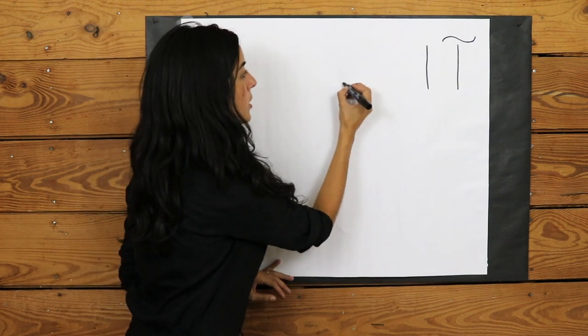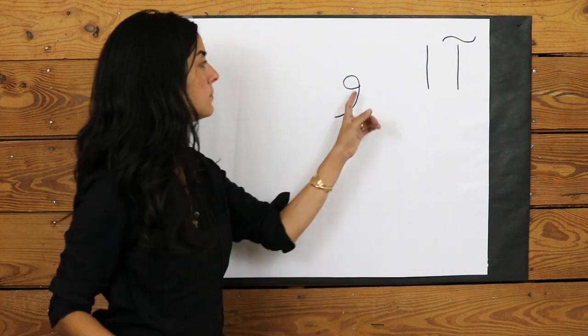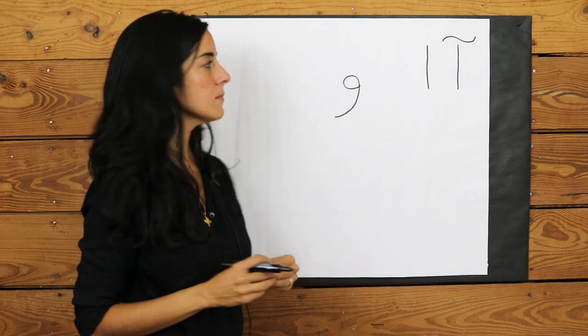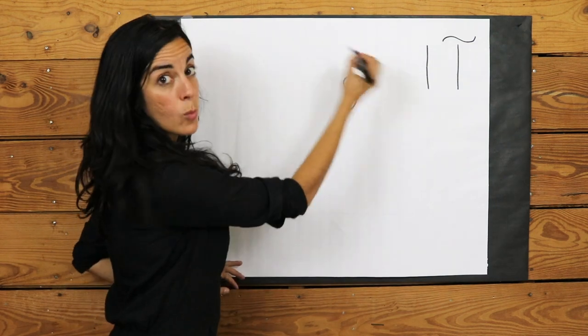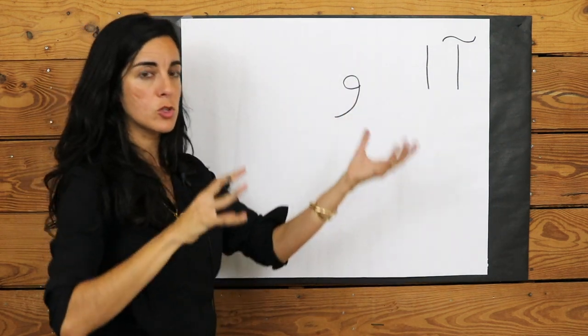The next vowel that appears in the alphabet is the letter O. And that only has one version. No Bozorg and Kuchik, big and little.